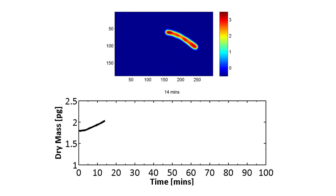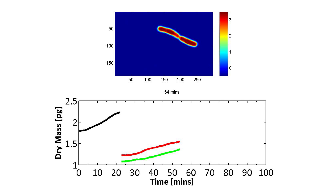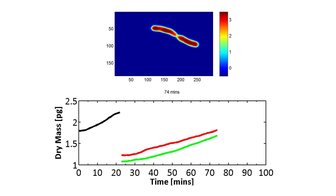Since the SLIM image is essentially a map of cell mass density, it can inform about cell growth over many cell cycles with incredible accuracy.